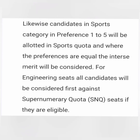Point C is the sports category, which gets the third preference. Preferences one to five will be allotted first. If these students fall under SNQ quota — meaning their parents' income is less than six lakhs — they will first be checked against the SNQ quota and provided lower fees. If they are not getting SNQ seats, they will then be provided sports quota seats.